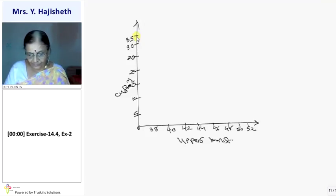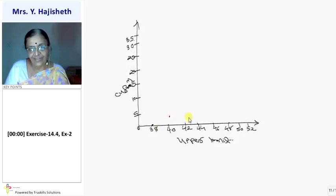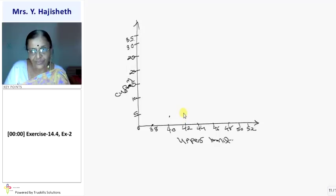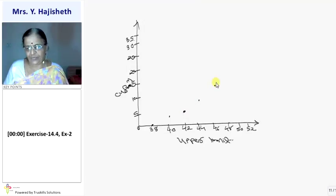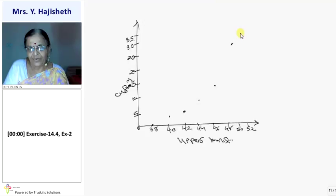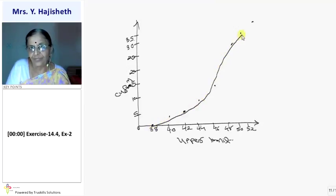Now plotting points: less than 38 is 0, so that point is plotted; less than 40 is 3, somewhere here; less than 42 is 5; less than 44 is 9; less than 46 is 14, somewhere here; less than 48 is 28, somewhere here; less than 50 is 32, a little further; less than 52 is 35, somewhere here. So I join them smoothly — this is my less than type ogive graph.